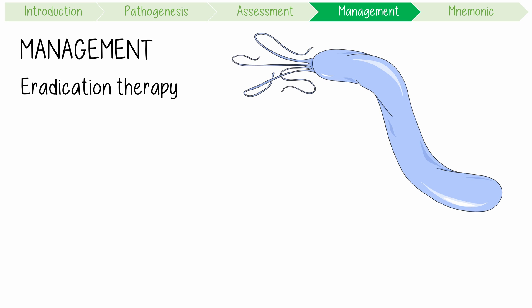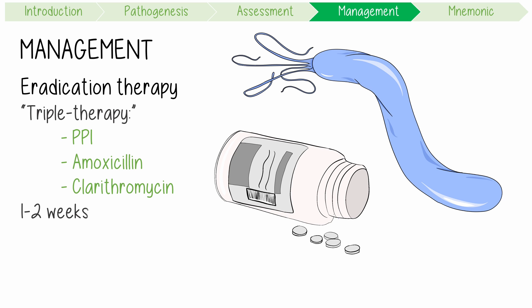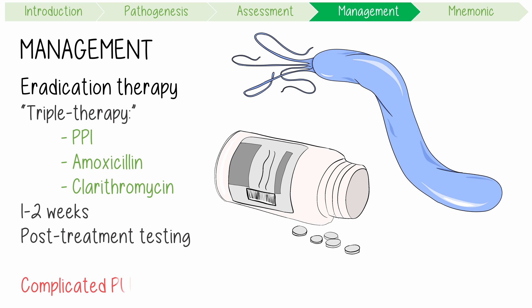Eradication of H. pylori infection requires a combination of drugs. First-line treatment in Australia involves a triple therapy regime combining a proton pump inhibitor, or PPI, amoxicillin, and clarithromycin for one to two weeks. It is recommended to assess the outcome with post-treatment testing, best done with a urea breath test. For all complicated ulcers, ongoing PPI therapy for about 8 weeks is appropriate to maximise the likelihood of full healing.